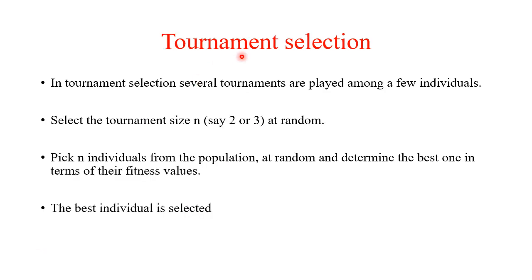Tournament selection is another technique for parent selection. In this method, several tournaments are played among a few individuals. The tournament size can be 2, 3, or any number. We pick n individuals from a population at random, determine the best one in terms of fitness value, and that best individual is selected. From each tournament, one individual is selected for generating the next generation.